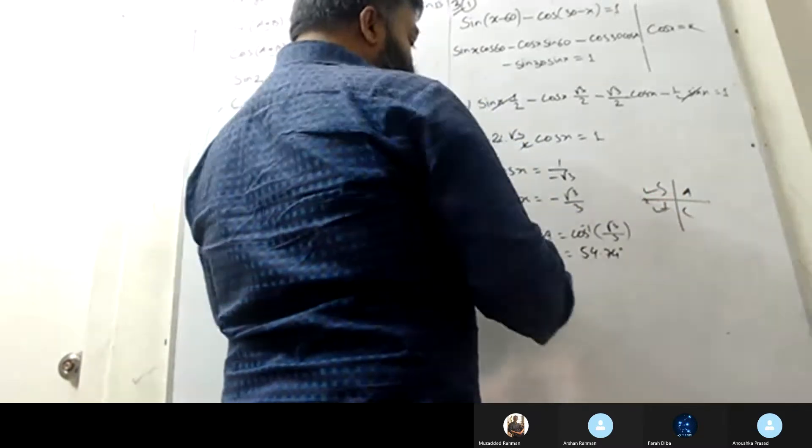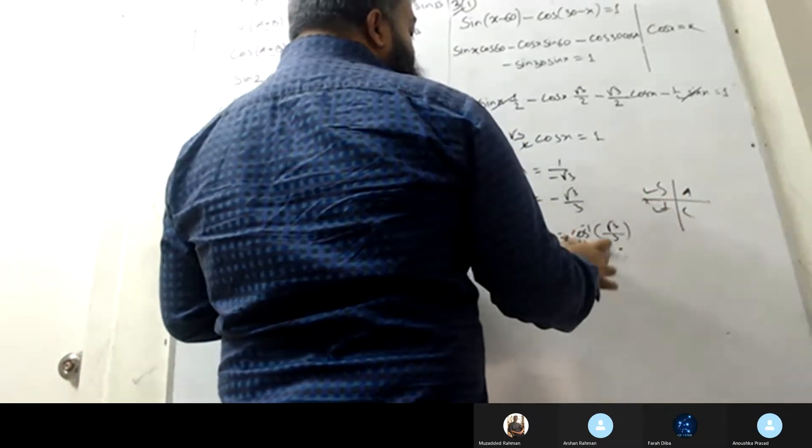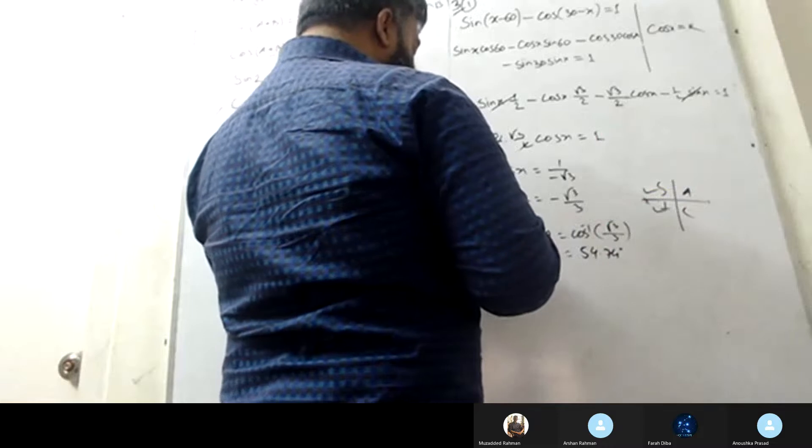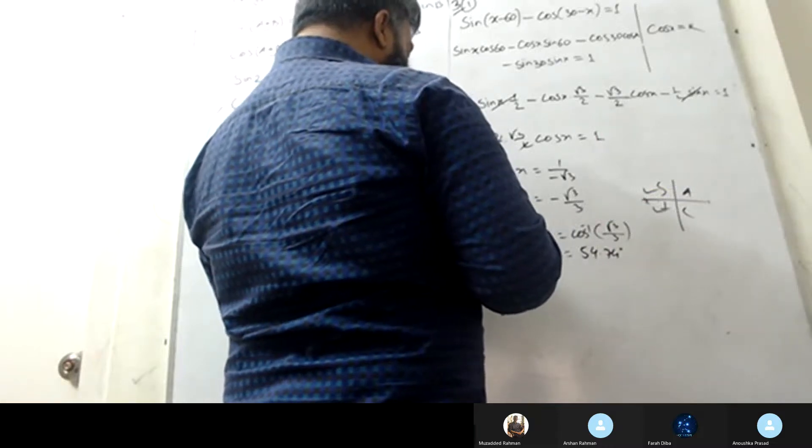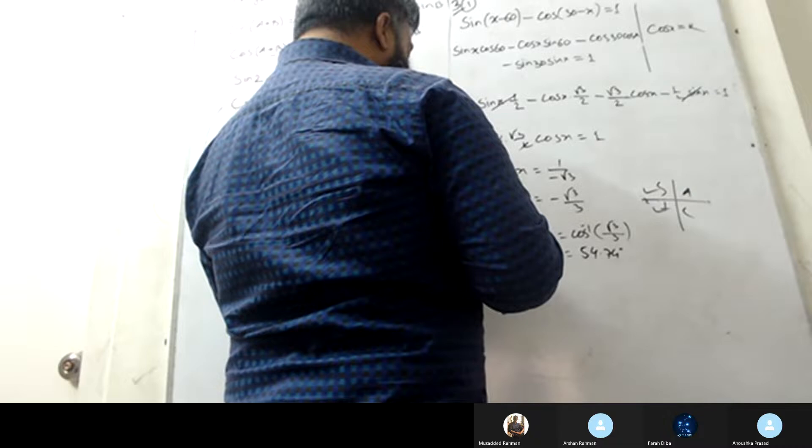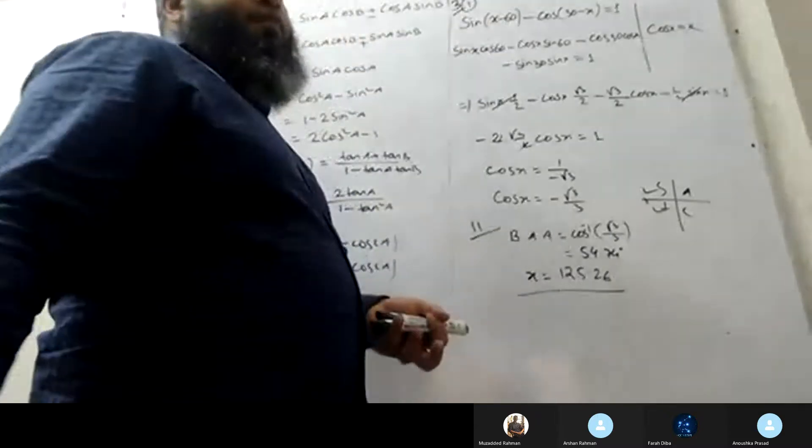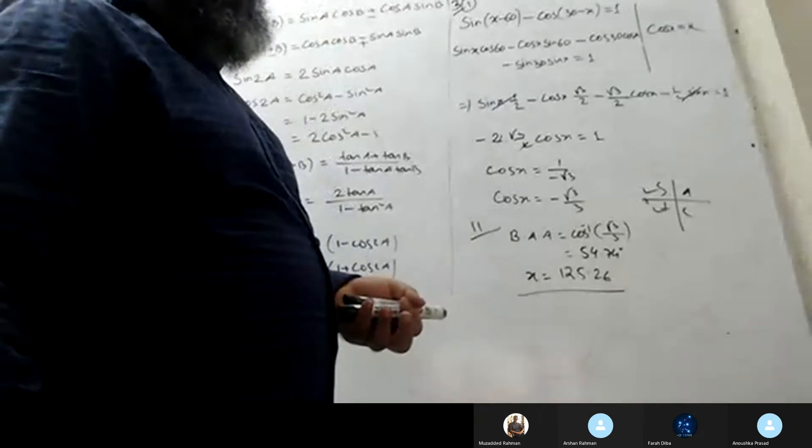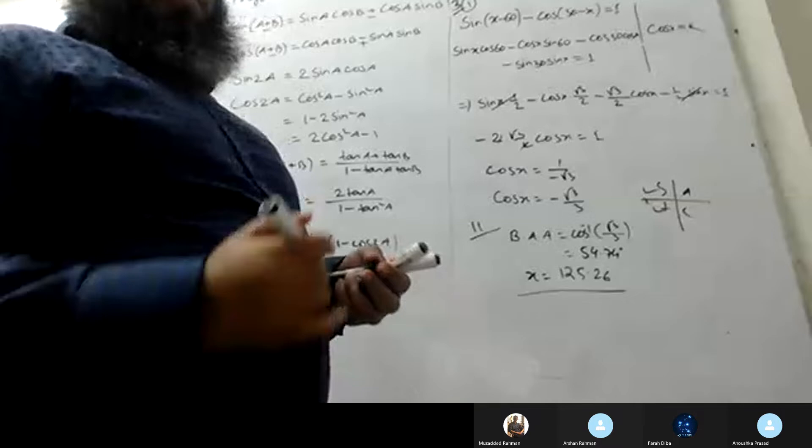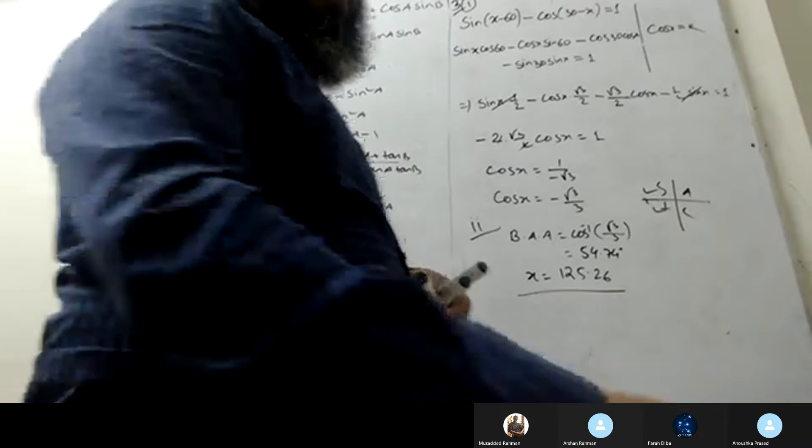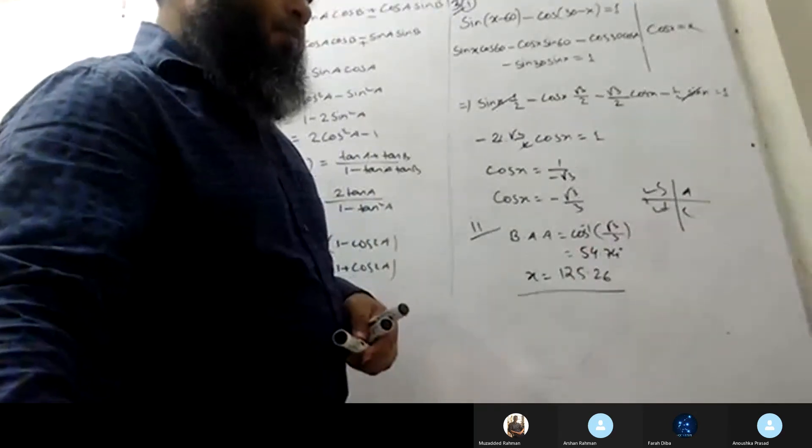X's value is 180 minus or 180 plus. So 180 minus 54.74 degrees equals 125.26 degrees. And 3 times 90 minus, 180 plus 54.74, gives the other solution.